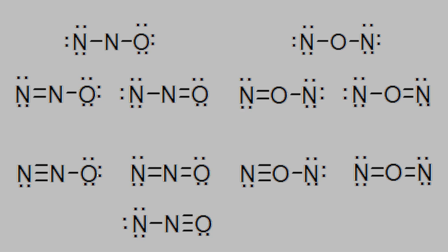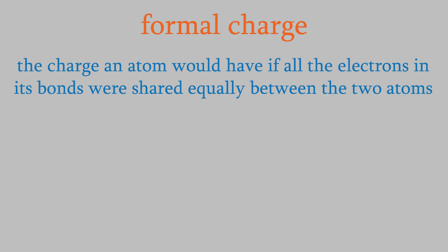How do we decide which is the correct structure? To do that, we need to understand something called the formal charge. The formal charge is the charge an atom would have if the electrons in all the bonds were equally shared between the two atoms.